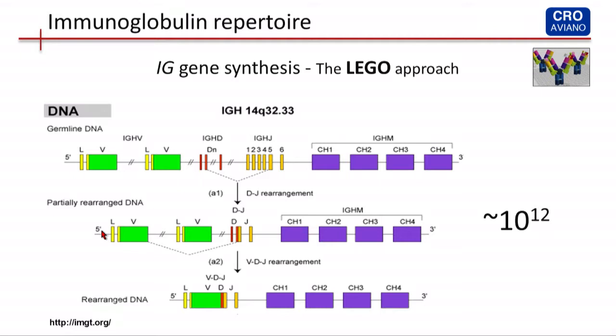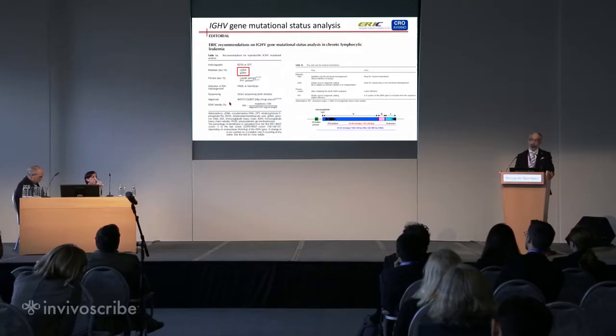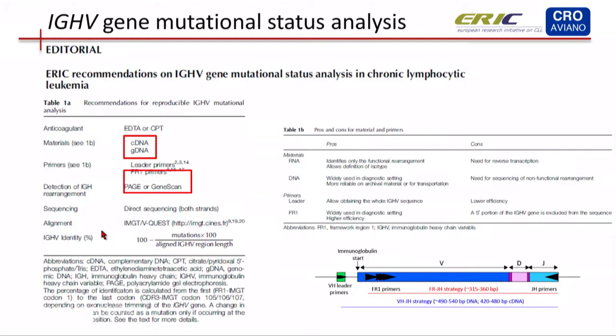Here is just a scheme of immunoglobulin synthesis, what we can call in a fashionable way the legal approach, to cite Professor Kosta Stamatopoulos. As you well know, at the end of the process we have more than 10 to the 12 possible immunoglobulin combinations. So how can we sequence this gene? In my lab, we followed the European Research Initiative on CLL (ERIC) recommendation. As a starting material, you can use both genomic DNA or RNA — retro-transcribing cDNA extracted from blood — and as a PCR strategy, you can use the leader primer or the FR1 primer in junction with an antisense primer in the JH region.